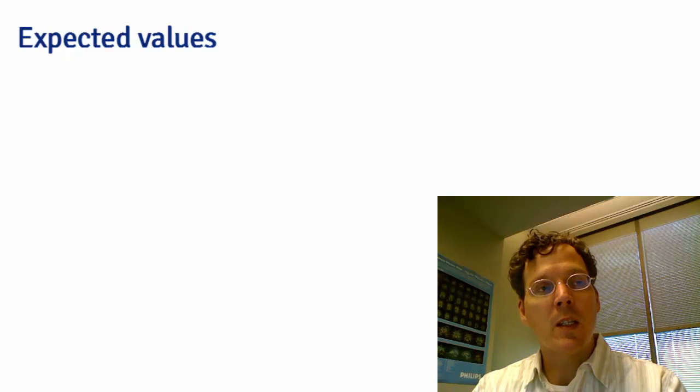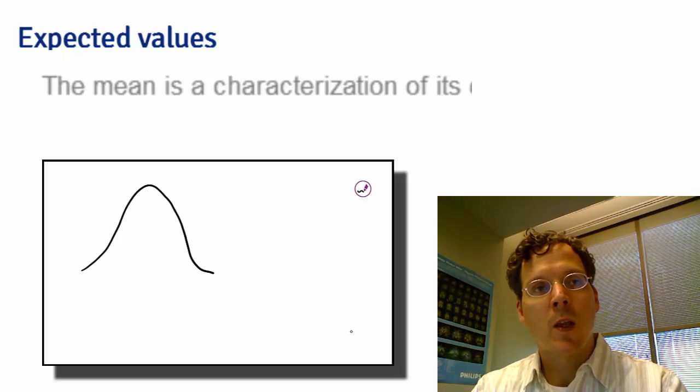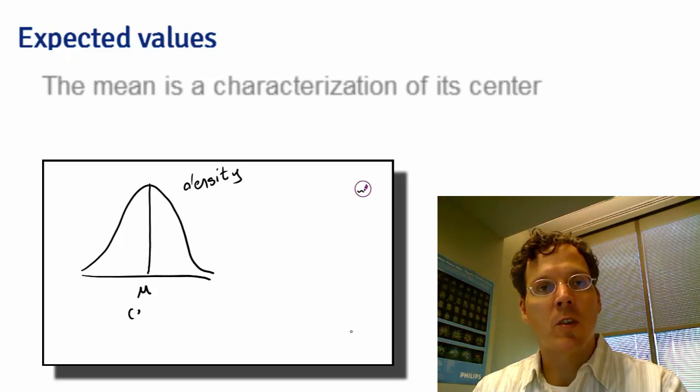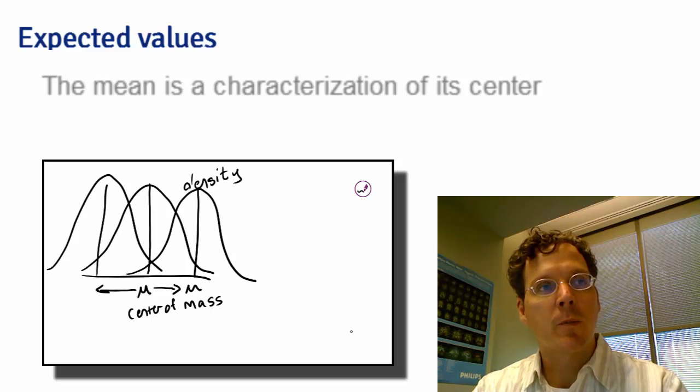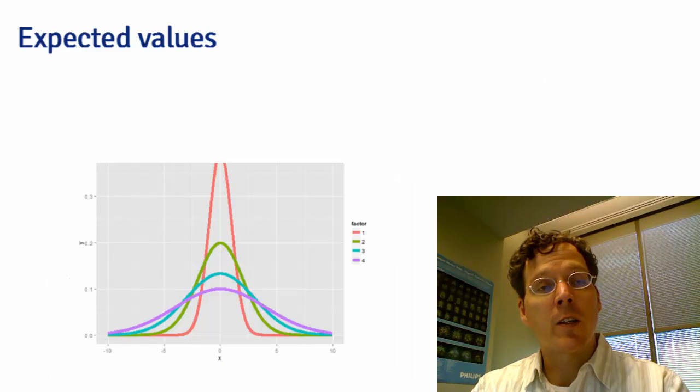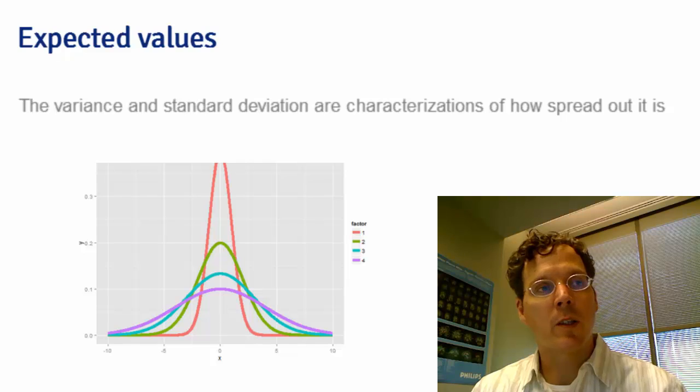The mean is the most useful expected value. It's the center of a distribution. As the mean changes, the distribution moves to the left or right. The variance is another characteristic of a distribution and it talks about how spread out it is.